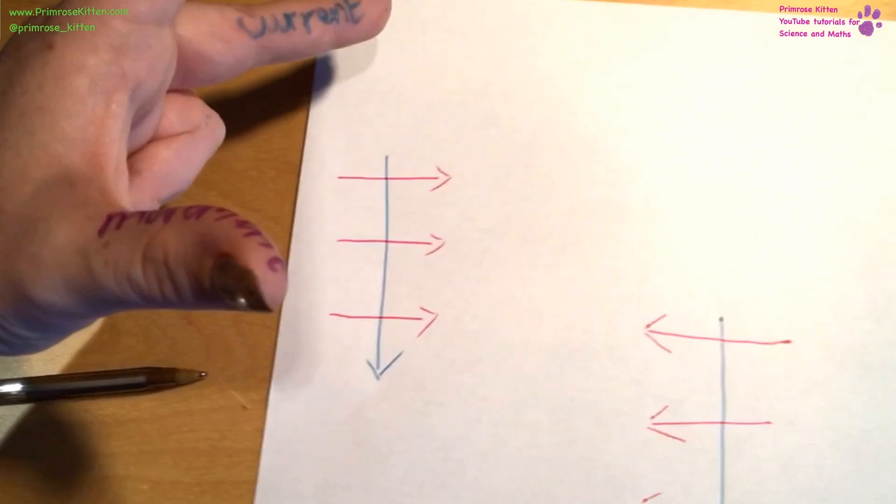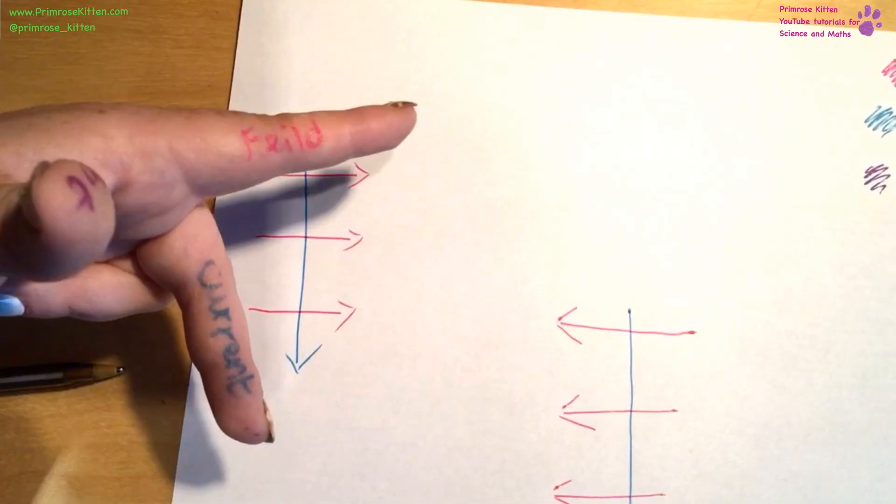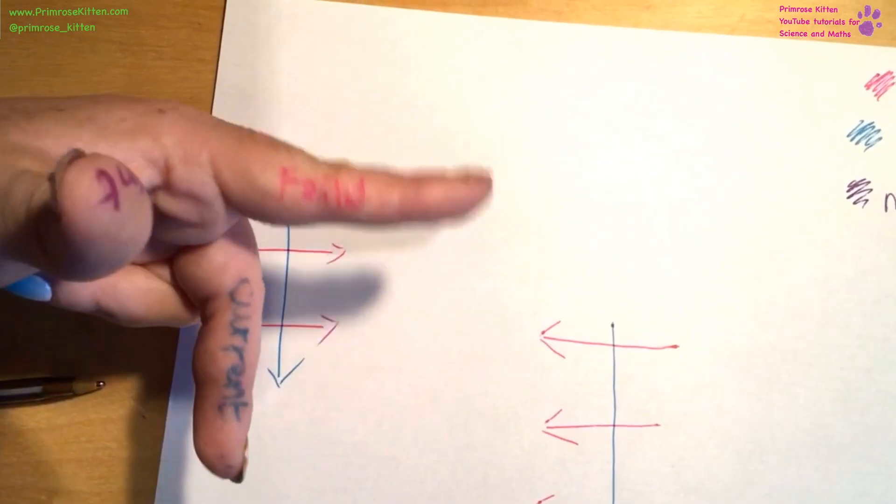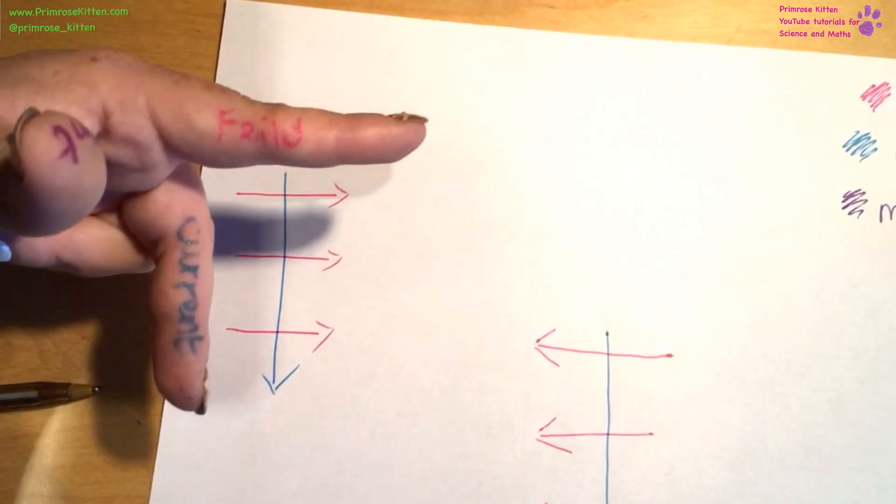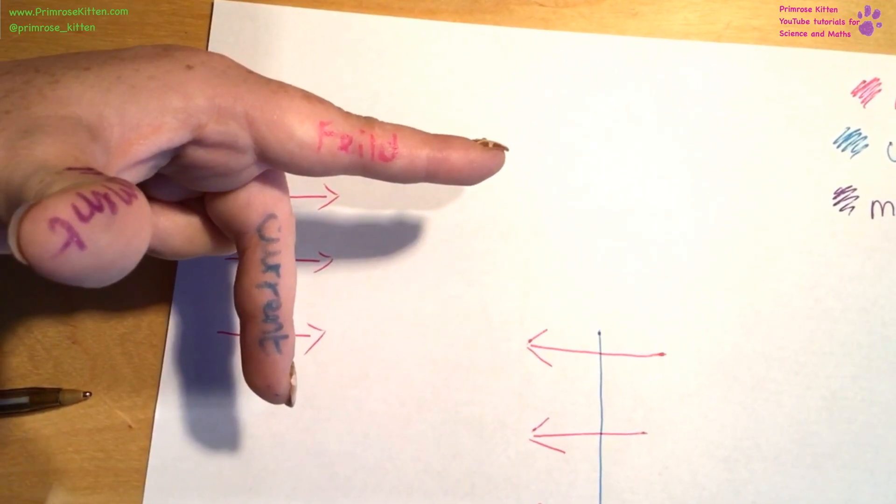And what you need to do when you have an exam question, is literally contort your hand until it fits in the right direction. So first, it's nice and easy. My field is going in that direction, my current is going in that direction, so the movement of the force is going upwards.